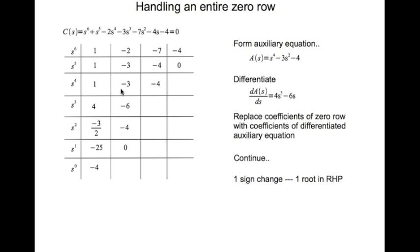Looking at how many sign changes there are in the first column of the Routh table, we see just one sign change. Therefore there should be only one root in the right half plane, so the system is unstable.